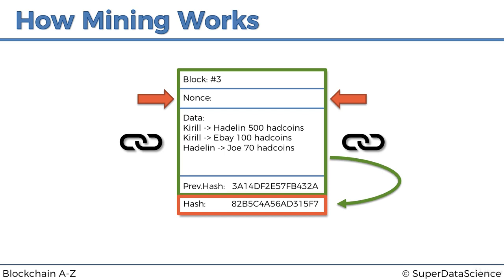The nonce gives us extra control and flexibility — we can now manipulate the hash value by changing the nonce. We can't change the block number, we can't change the previous hash since it's linked to the previous block, and we can't change the data because that would be tampering and defeat the purpose of an immutable ledger. But because we have the nonce, we are free to change its value and vary the hash. We cannot predict what the hashing algorithm will spit out, but we can vary the hash by varying the nonce.